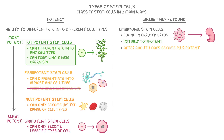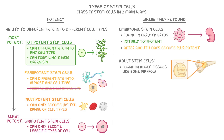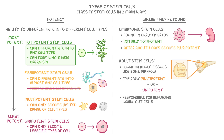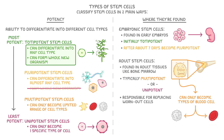As well as embryonic stem cells, we also have adult stem cells, and these are found in adult tissues like bone marrow, and are typically multipotent or unipotent. These are responsible for replacing worn out cells. For instance, multipotent stem cells in bone marrow can only become the specific types of blood cell, such as red blood cells or white blood cells.